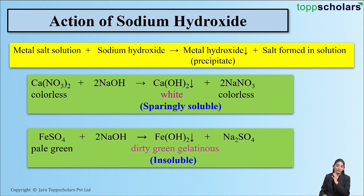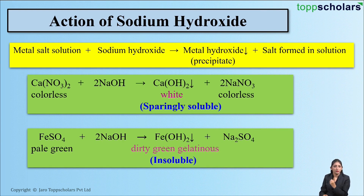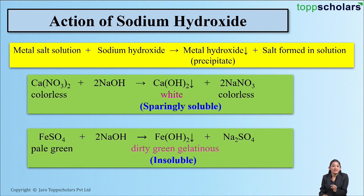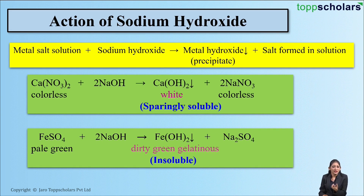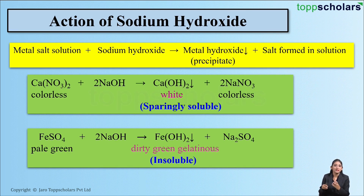The next example is ferrous sulfate. Ferrous sulfate solution is pale green in color. If we add drops of sodium hydroxide solution to ferrous sulfate solution, it results in the precipitation of ferrous hydroxide — Fe(OH)₂ — which forms a dirty green gelatinous precipitate, along with sodium sulfate. This dirty green gelatinous precipitate of ferrous hydroxide is insoluble in excess of sodium hydroxide solution.